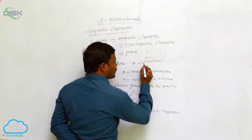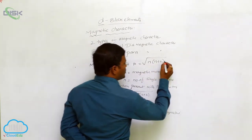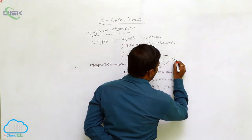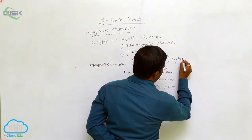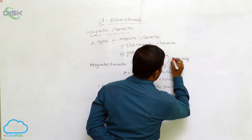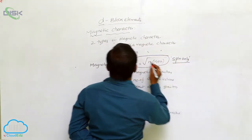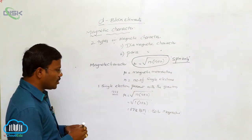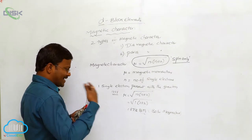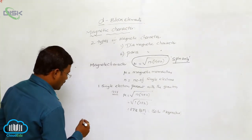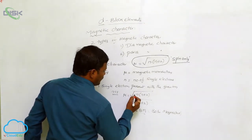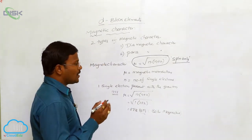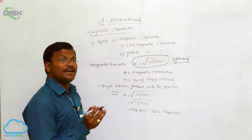The equation μ = √n(n+2) is called the spin-only formula. This spin-only formula is used to calculate the magnetic moment of a given set of d-block ions or d-block atoms and their respective ions. Here, n is the number of unpaired single electrons.